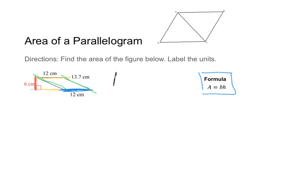So using my formula, area is going to equal base, which is 12 times height, which is 6. So 12 times 6 is 60.